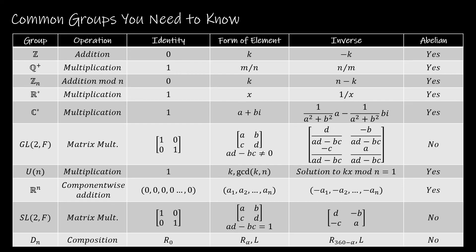Before I close out this video, I wanted to include some reference information — solid gold for you to screenshot or print out. It covers the different groups, their operations, their identities, the form the element will take, what the inverse of that element is, and whether or not that particular group is abelian. Coming up next, we're going to take our time through a group to show that something is a group when it maybe isn't obvious right away, and then do a quicker one where I wouldn't have to check all the different properties.